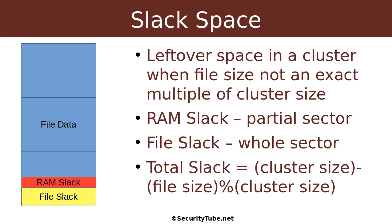We also have slack space — that leftover space in a cluster when the file size is not an exact multiple of the cluster size. We break this up into two different categories. One of them is called RAM slack, which is a partial sector of slack. There will usually be a sector that's only partly used, and what remains in that sector is called RAM slack. Any full sectors of slack are called file slack. To calculate the total slack, we first calculate what percentage of the last cluster is being used.